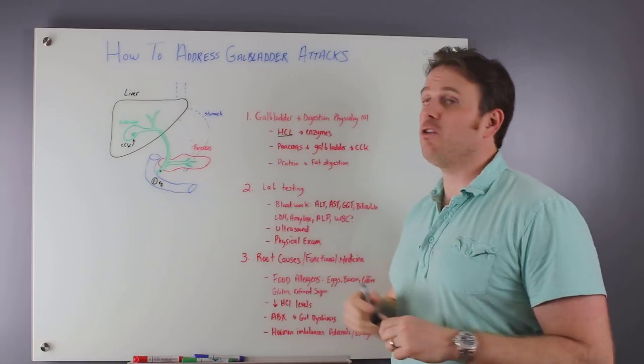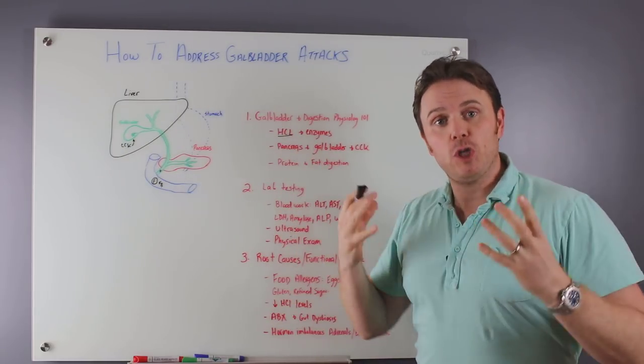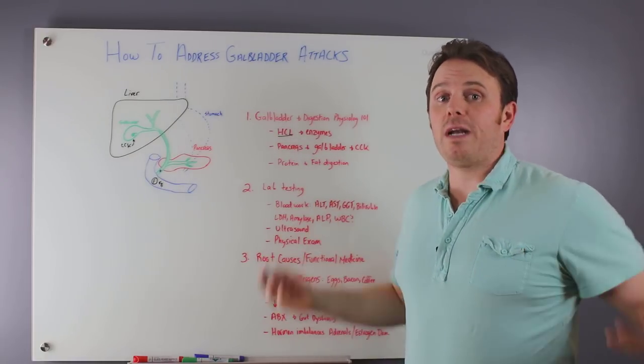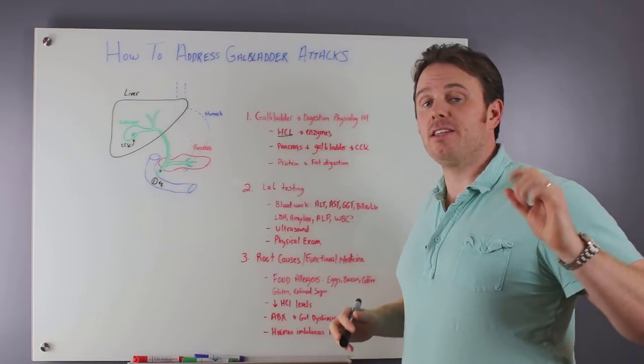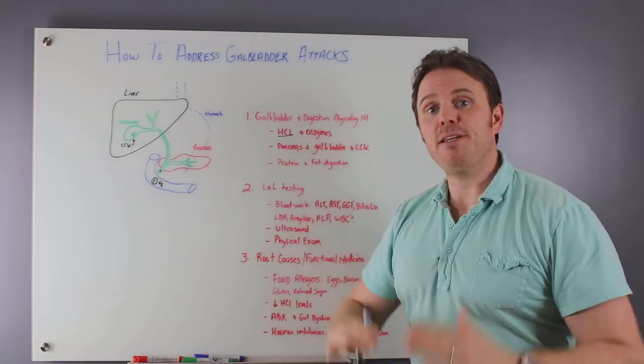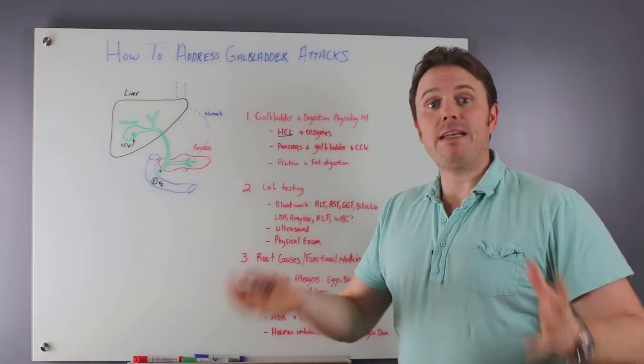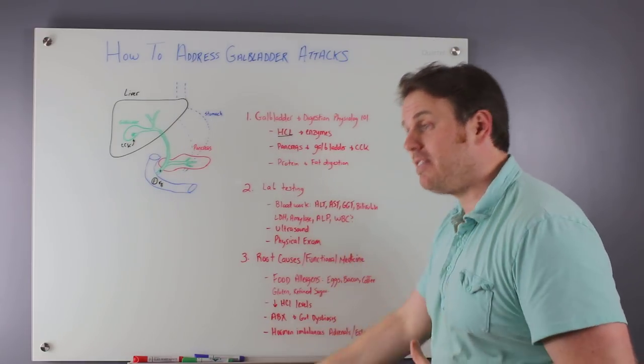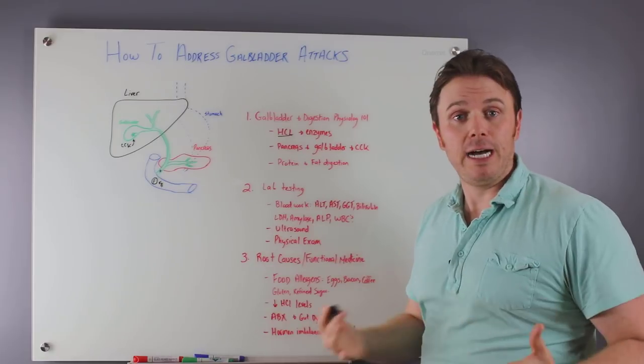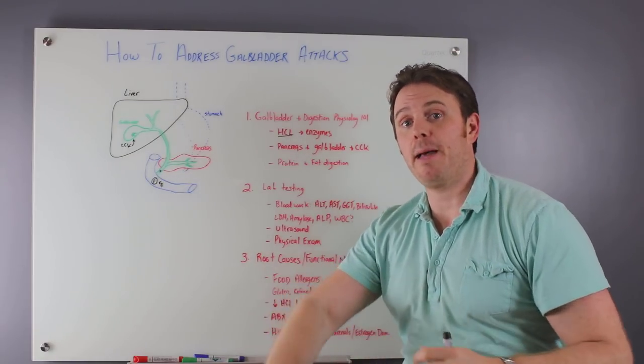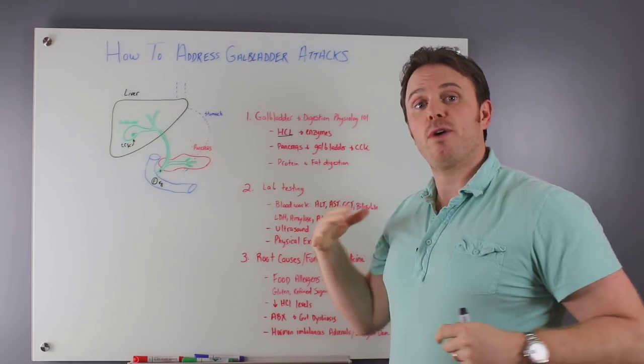So first off, gallbladder, we already talked about digestive physiology 101. So when we eat food, we chew it up. It's got protein and fat in there, number one. We're going to have hydrochloric acid produced in the stomach. That's going to bring the pH down, make it more acidic. That food mixed up with that HCl will get released into the small intestine. That's called chyme.